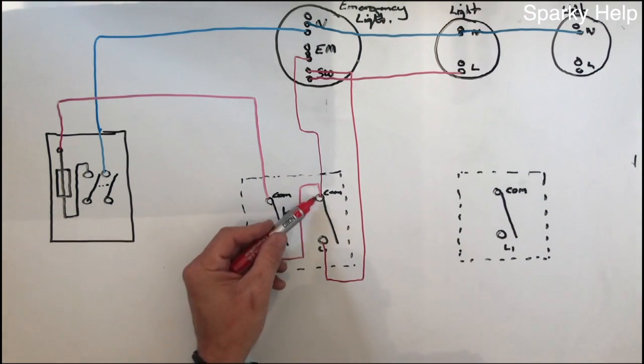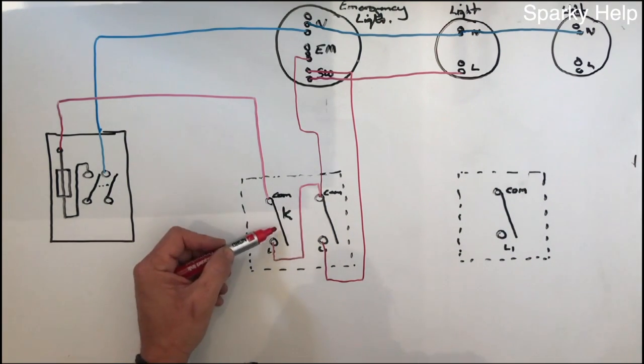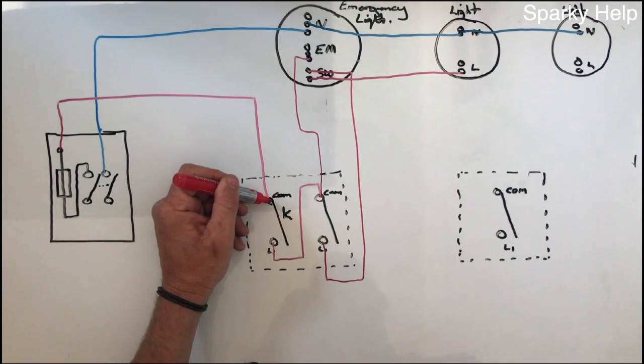So where do we take it from? Well we could take it from there, but if we take it from here, every time you turn the key switch off, it will kill every light from that point onwards.